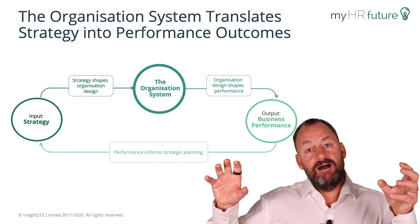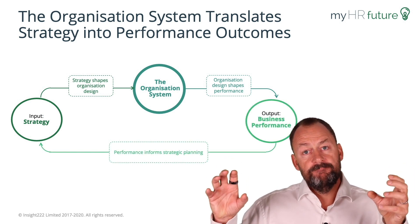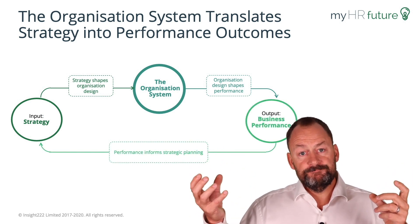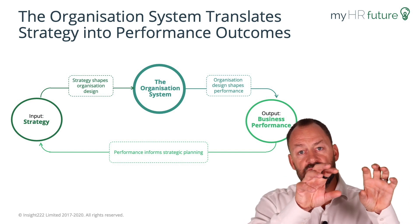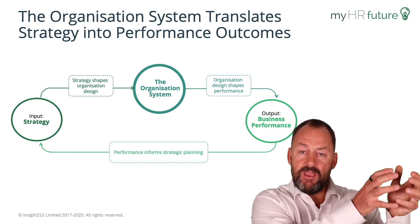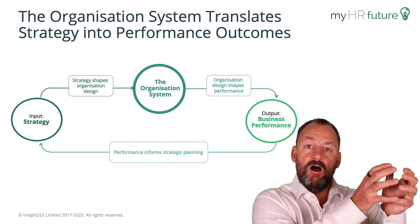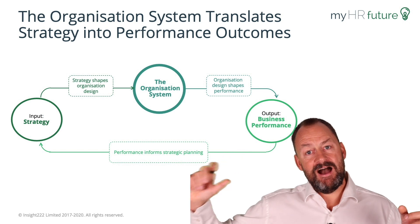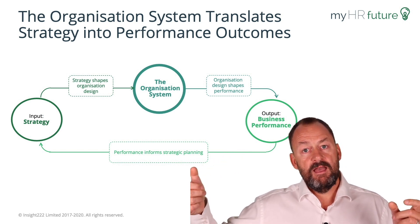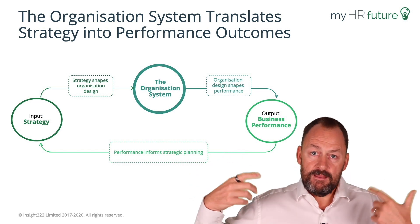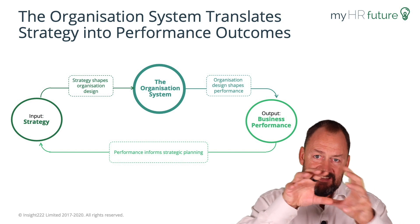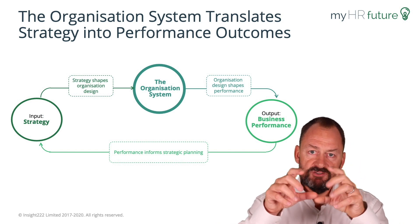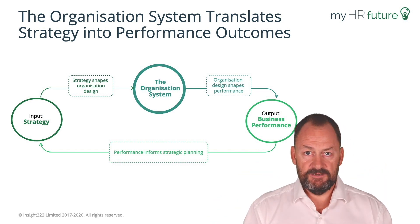That translates into our outcomes — the results, the scores on the doors. It's the organizational system that translates the theory of the strategy into the outcome of the result. I'm going to go into detail as to exactly what is in that box: the organization as a system.